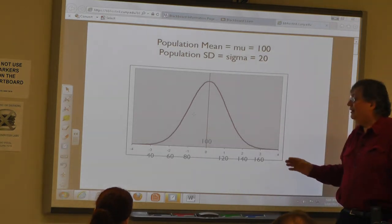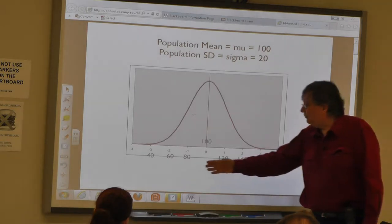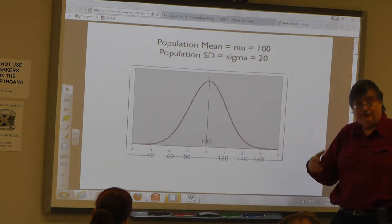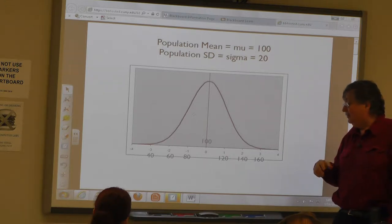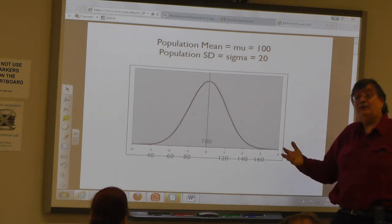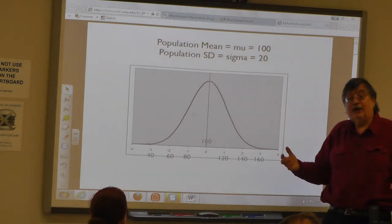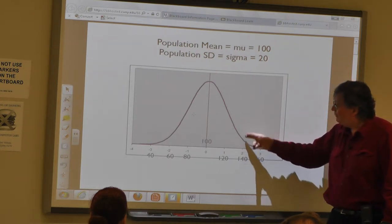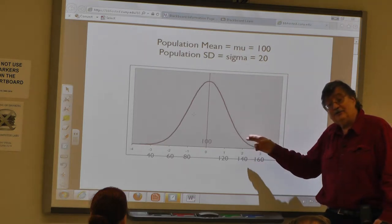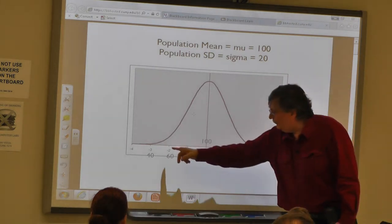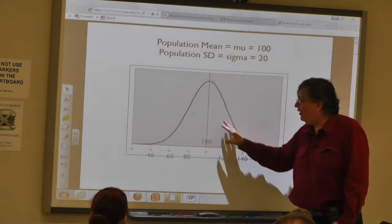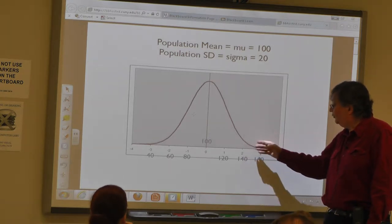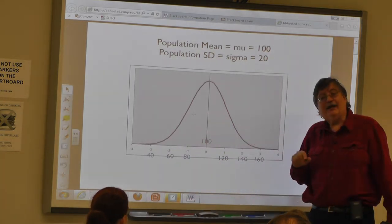We know that 95% of the population has a value between 60 and 140 — that's two standard deviations below to two standard deviations above, roughly. We know now it's really 1.96 standard deviations. If I were to ask you what percentage of the population — let's say this is IQ — has an IQ above 140, that's exactly two standard deviations above. Between negative two and positive two standard deviations is 95%, so since this is symmetrical, we'd have half of the remaining 5% above two, which is about two and a half percent.